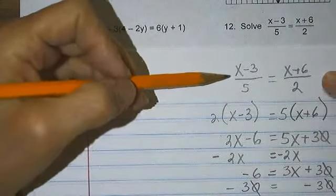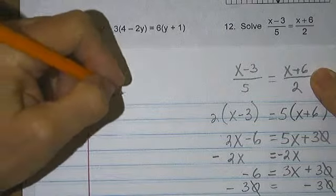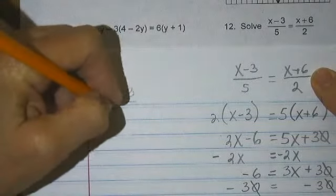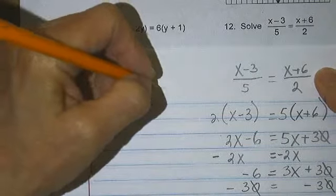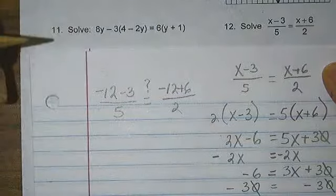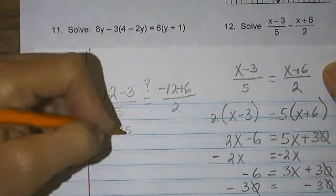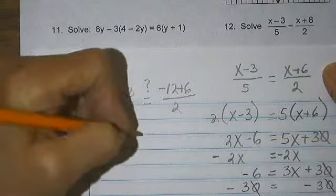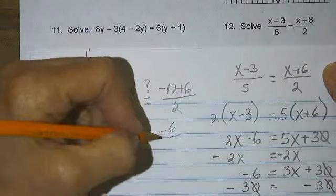Now, how do I check and know I'm right? I substitute into the original equation. Negative 12 minus 3 over 5 is equal to negative 12 plus 6 over 2. Negative 12 minus 3 is negative 15 over 5, is equal to negative 12 plus 6 is negative 6 over 2.